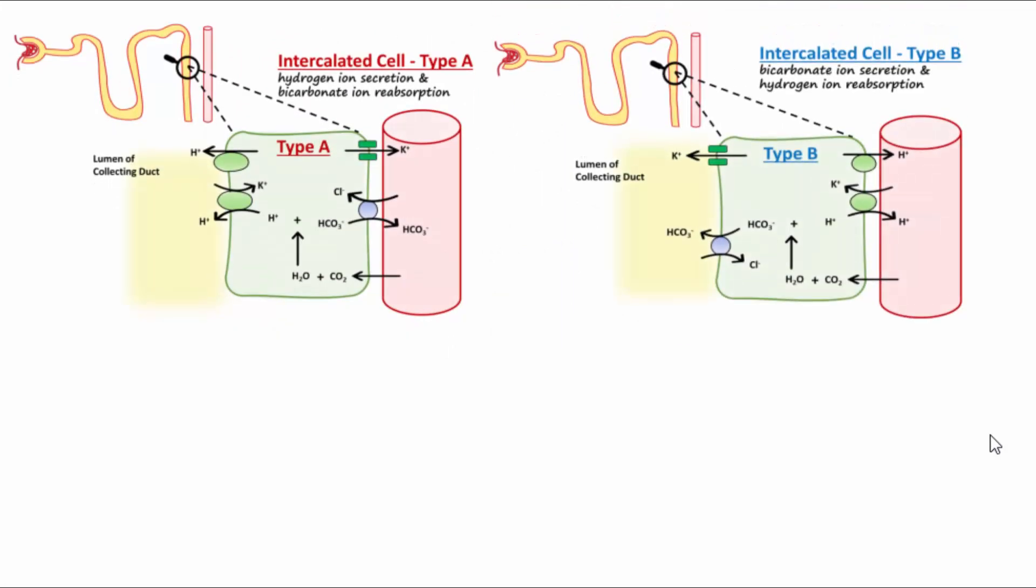Comparing type A and type B cells side by side, notice the difference in the location of carriers that transport the various ions across the membranes. The pH of the blood determines which type of cell is active.